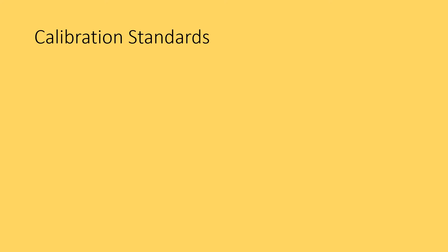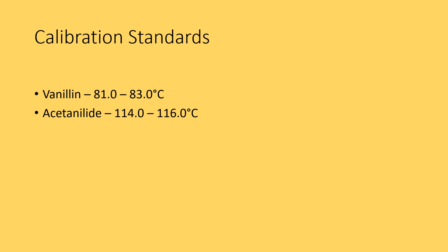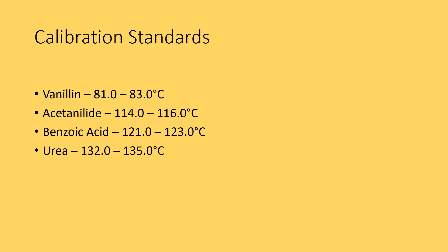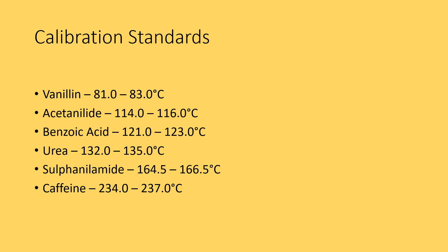The calibration standards used for the melting point apparatus are: Vanillin for a range of 81 to 83°C; Acetanilide 114 to 116°C; Benzoic acid 121 to 123°C; Urea 132 to 135°C; Sulfanilamide 164.5 to 166.5°C; Caffeine 234 to 237°C; and Anthraquinone for a range of 283°C. These are a few calibration standards — there are more available and you can choose suitable ones.